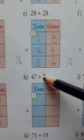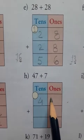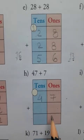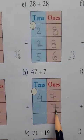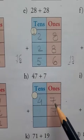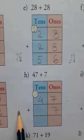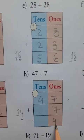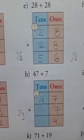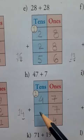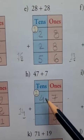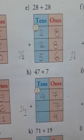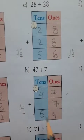Next one is 47 plus 7. You write 47 here. Where do you write 7 — in the tens place or the ones place? 7 ones — so you write 7 in the ones place. Now, add 7 plus 7 is equal to 14. So you write this 4 in the ones place and this 1 carry over to the tens place. Here in the tens there is nothing — only 4 tens. You add the carry: 4 plus 1 is equal to 5. So you write 5 here.